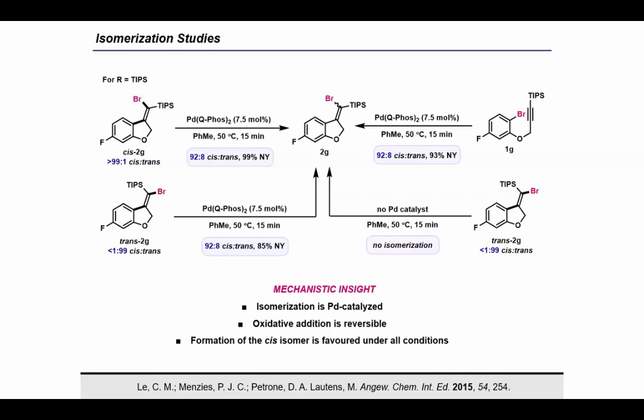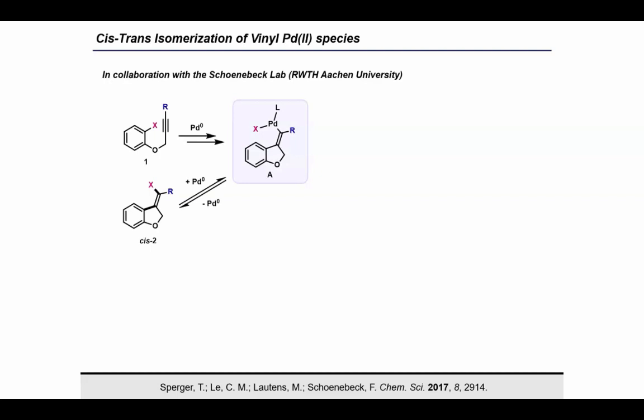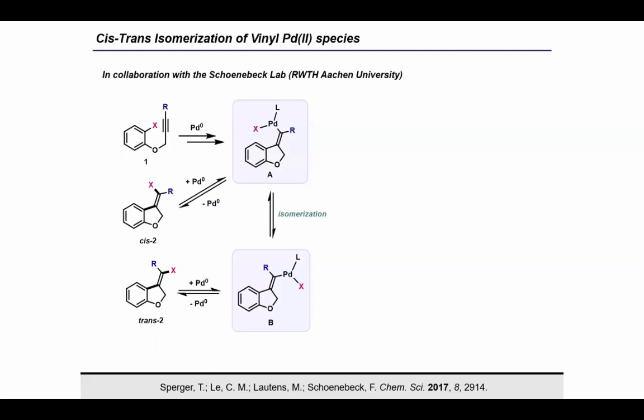The reason why I want to highlight this is because, in a later story that I will be sharing, we demonstrate that we can access the trans isomer exclusively. So, for this reaction, our proposed mechanism begins with oxidative addition into the aryl halide bond, which is followed by cis-carbopalladation to generate vinyl-palladium complex A. Carbon-halogen bond reductive elimination from this species would generate the cis isomer as expected. In order to form the trans isomer, this would necessitate the formation of the isomeric vinyl-palladium complex B through an isomerization pathway. Reductive elimination from intermediate B would then give the trans isomer.